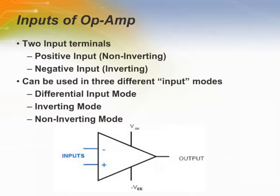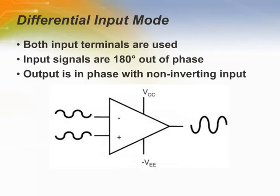Op-Amps have two input pins: one is the non-inverting or positive pin, and the other is the inverting or negative pin. In general, Op-Amps can be set up in three different input modes: Differential Input Mode, Inverting Input Mode, and Non-Inverting Input Mode. In the Differential Input Mode, the signal is applied to both input terminals; these signals have to be out of phase, and the output is going to be completely in phase with the non-inverting signal.